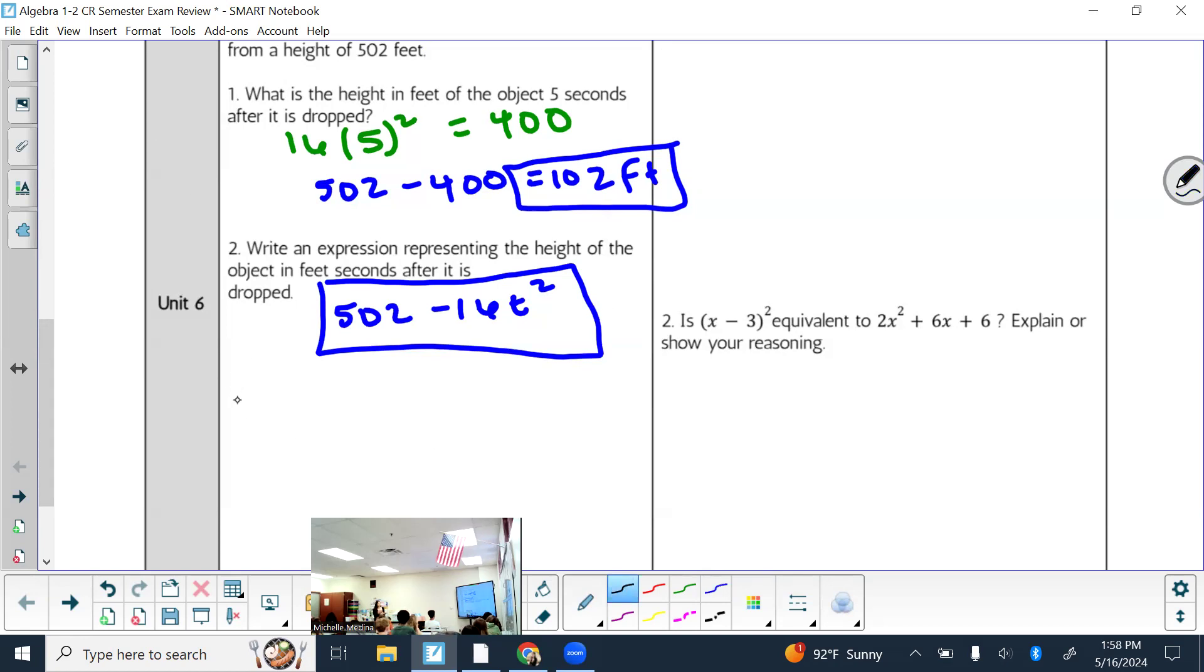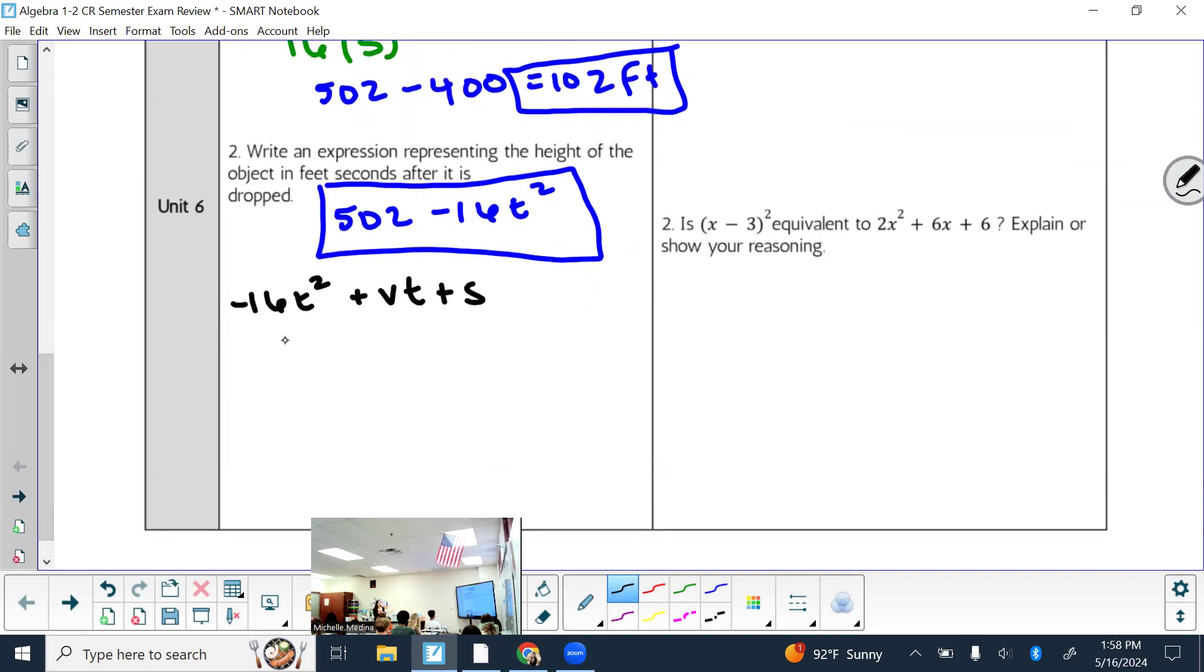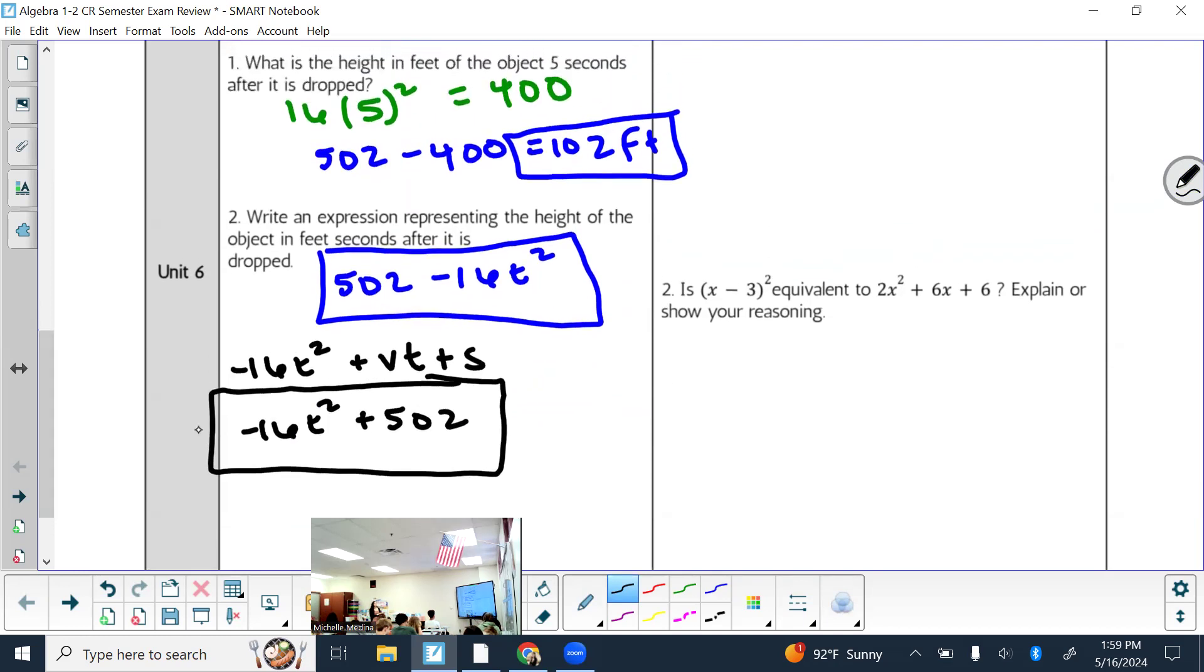The other way I mentioned you could go about it: Number two says write an expression representing the height of the object in feet t seconds after it is dropped. You could think about the math we just did and apply it. So it's like whatever this was, we subtracted it from the 502. It wants it for t seconds after it was dropped, not just any specific time frame. It wants it to work for any time frame. You really could just write this and be done, because that's the math we did.